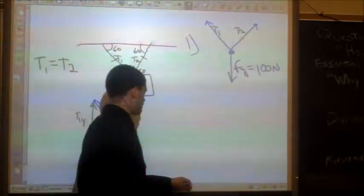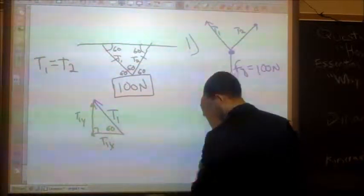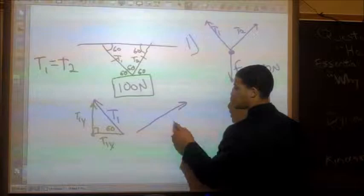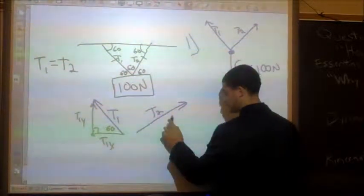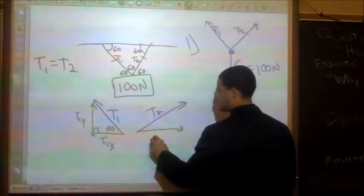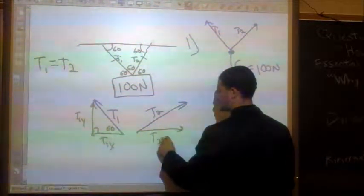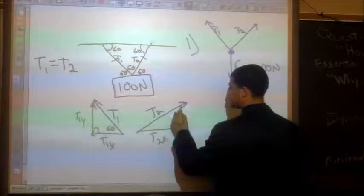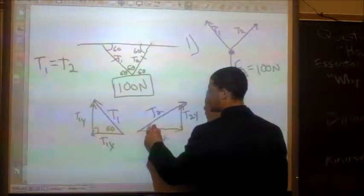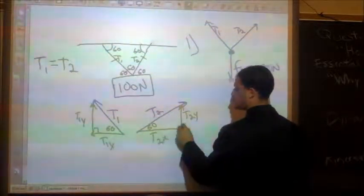The same thing, we could do the same thing with t2. Let's draw that arrow and break it into its x and y components. So here's t2. So we have an arrow, and here's t2x, and here's t2y. And because of the alternate interior angles, we know that that's 60.